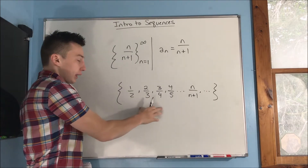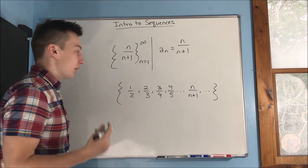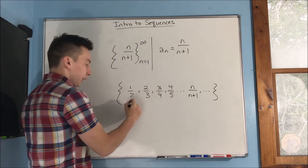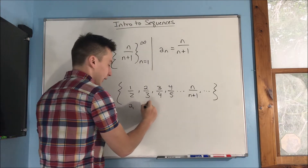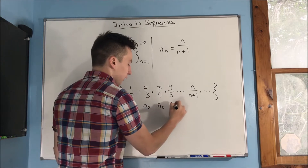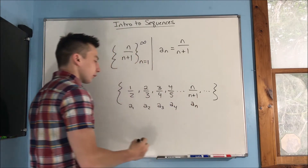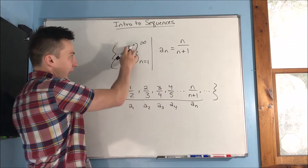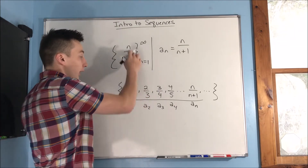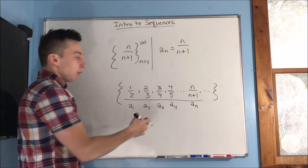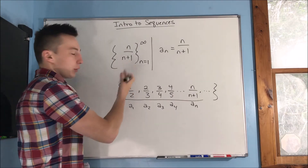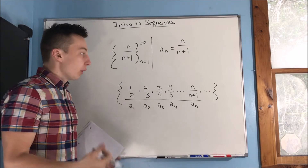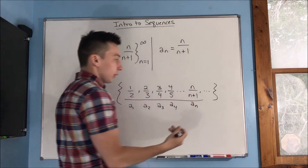If you write that out, it looks like this — another way to write an infinite sequence is to list the first couple of terms. This is the first term a sub 1, this is the second term a sub 2, the third term, the fourth term, and then the nth term. So you plug in one and get one over two, plug in two and get two over three, and so on. Plug in n and you get n over n plus one.